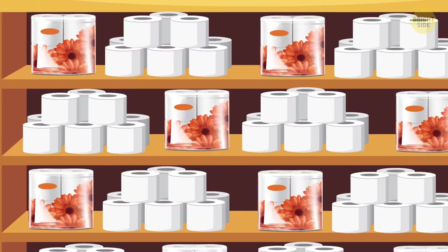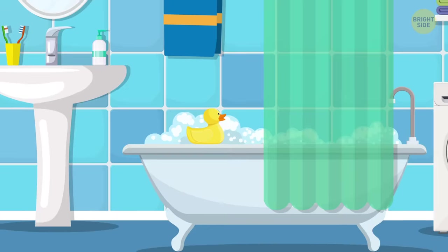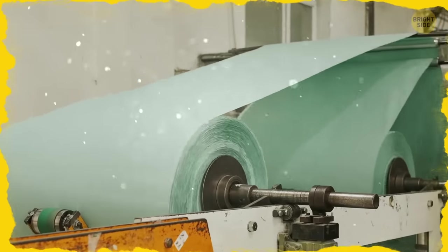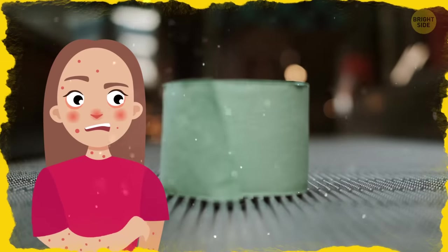Mainstream manufacturers bleach their toilet paper to make it sparkly white because white is associated with cleanliness. Your tub and toilet are pristine white too. You can find rainbow toilet paper but, careful, some people have an allergic reaction to the dyes.